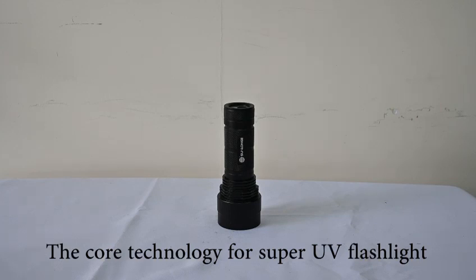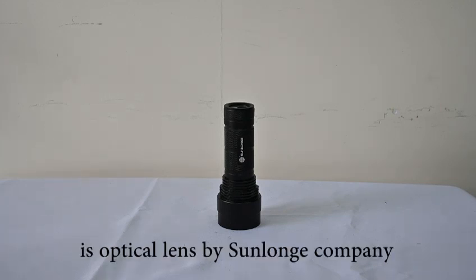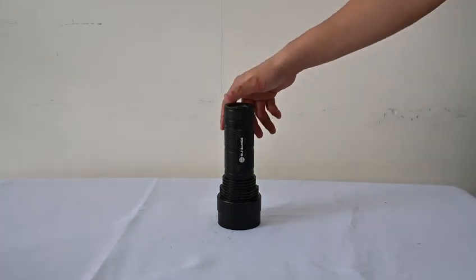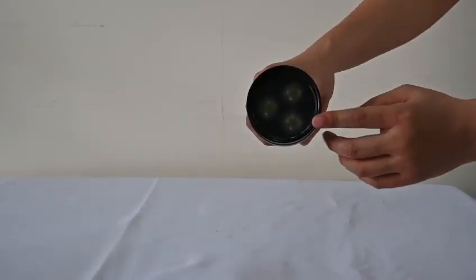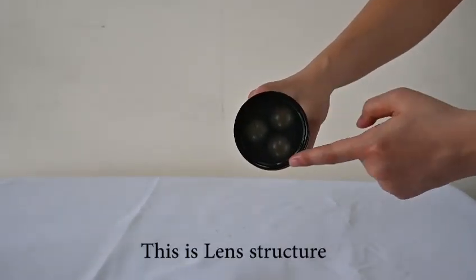The core technology for the Super UV flashlight is the optical lens by Sanlong company. This is the lens structure.